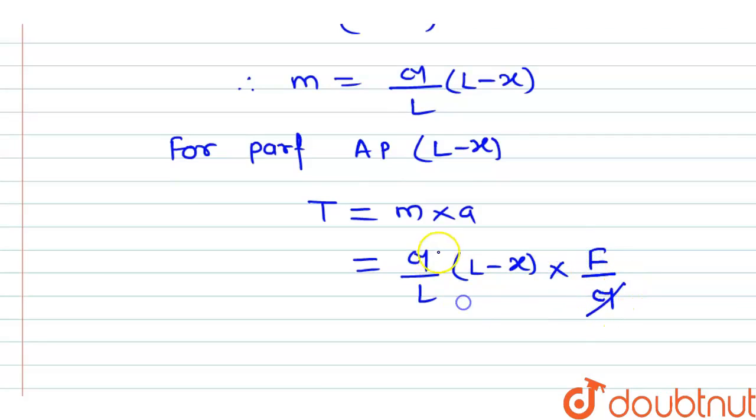Now this M, this M, this M will get cancelled. Therefore, tension in the string will be equal to F times L minus x divided by capital L.